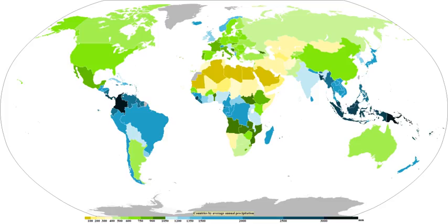In mountainous areas, heavy precipitation is possible where upslope flow is maximized within windward sides of the terrain at elevation. On the leeward side of mountains, desert climates can exist due to the dry air caused by compressional heating. Most precipitation occurs within the tropics and is caused by convection. The movement of the monsoon trough, or intertropical convergence zone, brings rainy seasons to savanna climates.